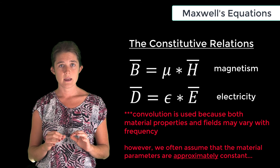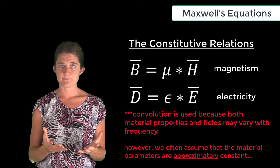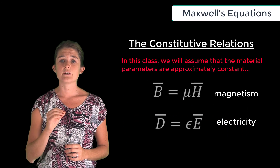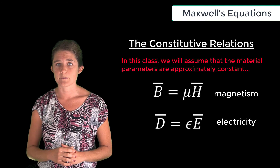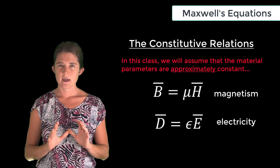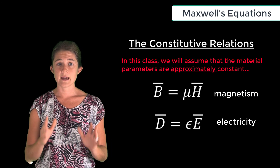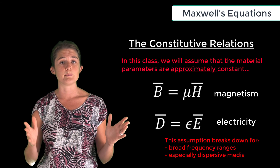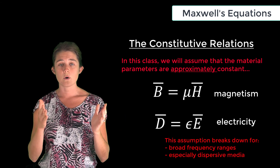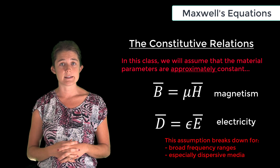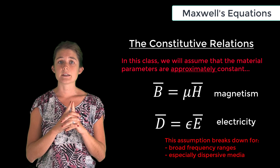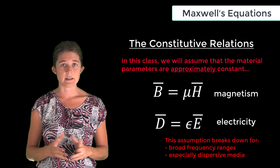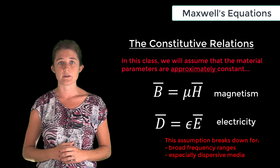However, it is common and usually valid to assume that the material properties are approximately constant. For the purposes of this class we will make that assumption and use a simple multiplicative relationship rather than convolution. However, if you ever need particularly accurate results over a broad frequency range, or if the material properties are highly sensitive to frequency, it is important to be aware that this is an approximation, and like all approximations it does eventually break down.